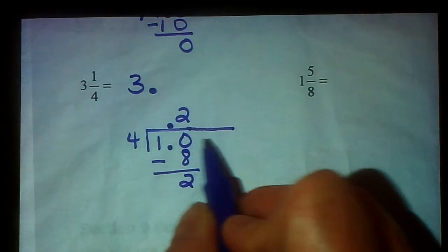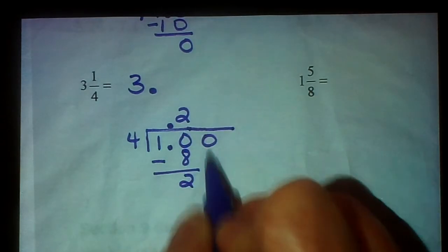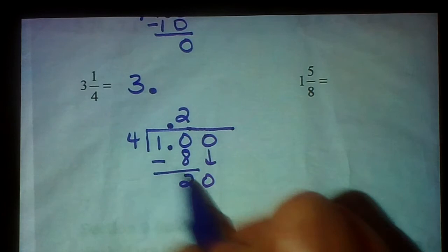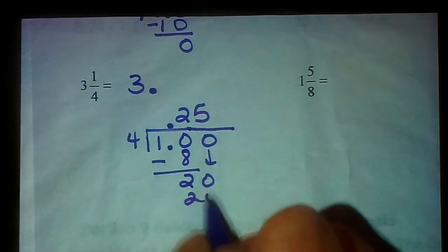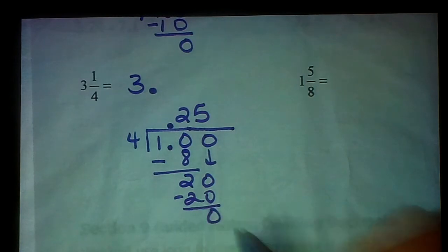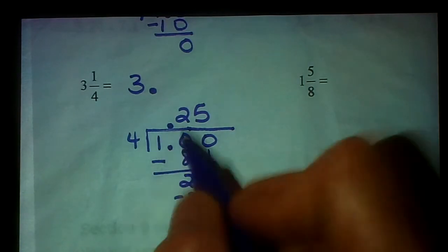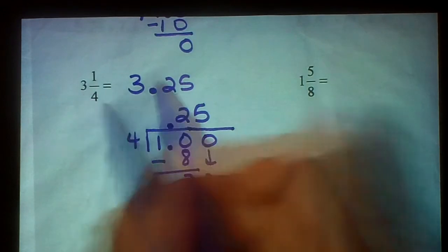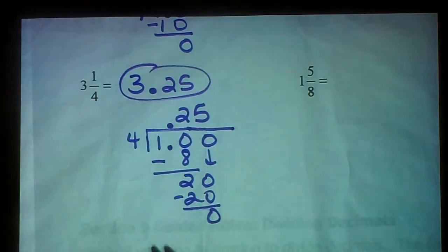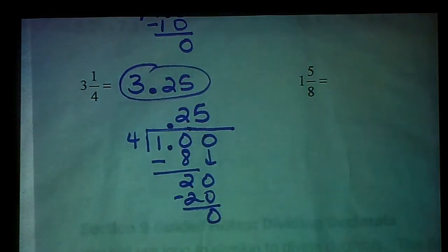That means I need another 0. So I'm going to drop that down. 4 goes into 20 five times. 4 times 5 is 20. 20 minus 20 is 0. Now we know that we're done. So the 0.25 is what goes after the 3. So 3 and 1/4 is equivalent to 3.25. All right.